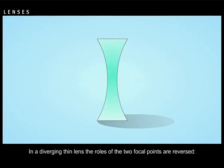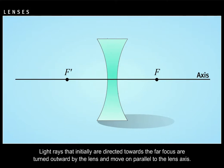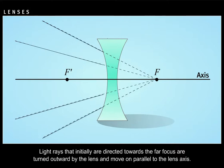In a diverging thin lens, the roles of the two focal points are reversed. When light rays that are parallel to the lens axis pass through the lens, they are deflected to diverge as if the light came directly from the first focus. Light rays that initially are directed towards the far focus are turned outward by the lens and move on parallel to the lens axis.